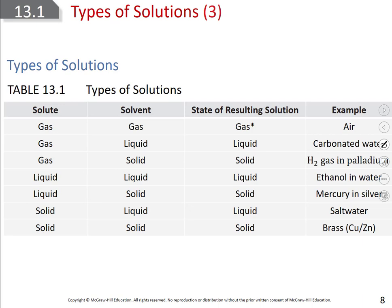You can also have a liquid dissolved into a solid. An example of this is mercury, which is a liquid, dissolved into silver, which is a solid. Why would we dissolve mercury into silver? This used to be very common, less so now. What was the purpose of that?